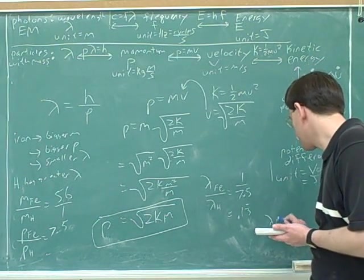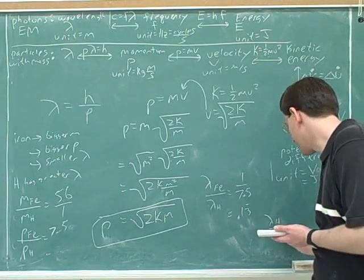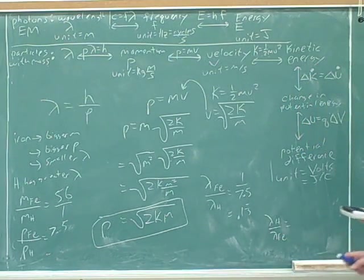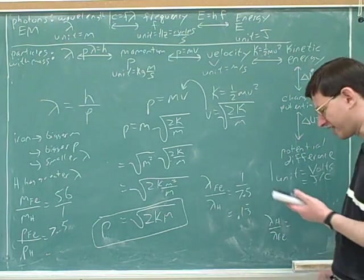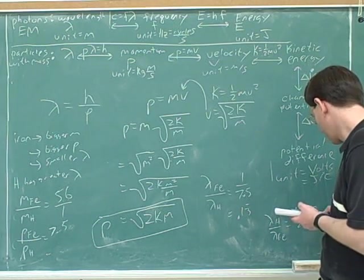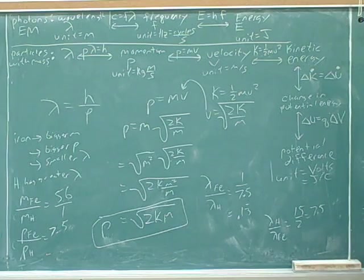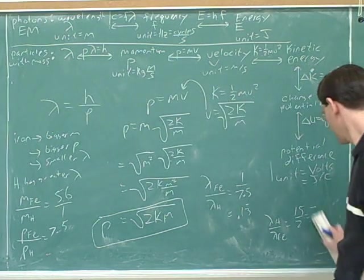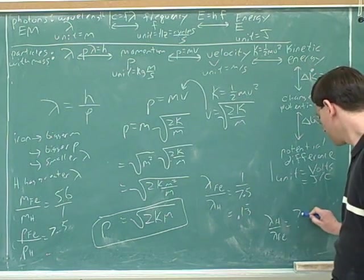Maybe it would be better to say what the ratio of the hydrogen is to the iron. 7.5. Yeah, that came out as a nice even number, didn't it? That's 15 to 2, or 7.5. 7.5 is good enough.